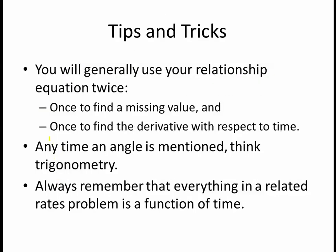Here are a few tips and tricks that I've picked up. First, you will generally use your relationship equation twice — once to find a missing value and once to find the derivative with respect to time. It will not always be that way, but generally we will. Anytime an angle is mentioned, think trigonometry. Always remember that everything in a related rates problem is a function of time — every single variable is related to time.